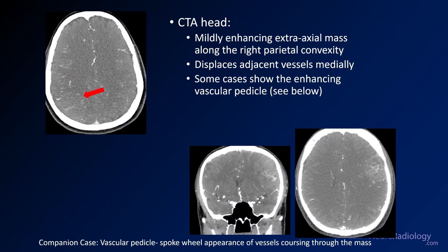The patient also had a CTA. We can see vasculature pushed to the side, but the mass itself isn't seen that well. In a companion case with a similar mass along the convexity, you can see a cluster of vessels centrally within the mass — that spoke-wheel vascular pattern is also typical for this diagnosis.